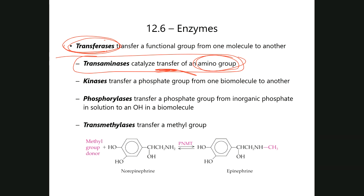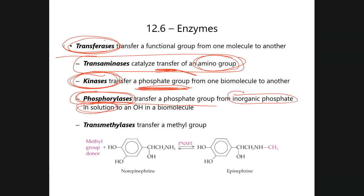Kinases are another important class of transferase enzymes — they transfer phosphate from one molecule to another. There's an important distinction with phosphorylases: a phosphorylase transfers phosphate not from one molecule to another, but picks up inorganic phosphate floating in solution and places it on a larger organic structure such as another enzyme. The difference is: a kinase takes phosphate from compound A and puts it on compound B; a phosphorylase picks up free inorganic phosphate and places it on a target structure.